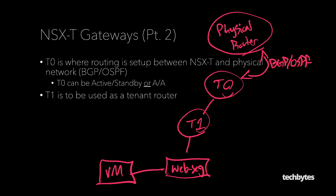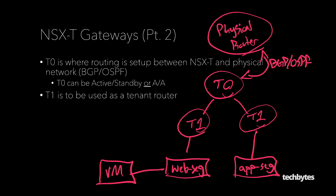One of the most common use cases for a T1 is to use it as a tenant router. If we have another tenant and want to let them manage their environment, we can give them their own T1 and their own segments, while they route out through our T0. This is a very common multi-tenancy setup. One advantage is that we could technically have overlapping subnets across tenants, because we can do network address translation on these T1s.